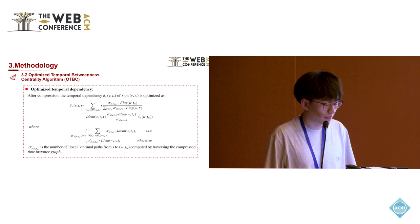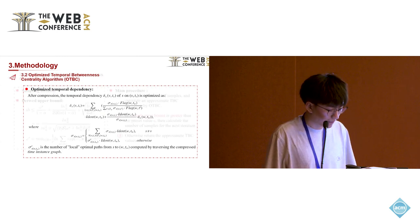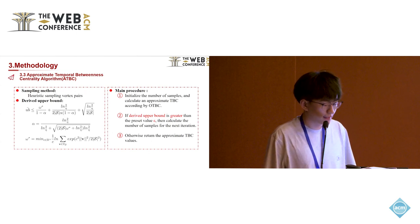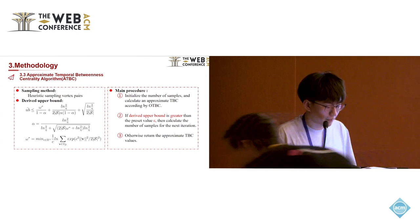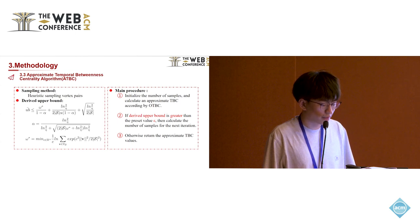Using the compressed time instance graph, we devised an optimized temporal dependency. When calculating the optimal temporal path count, we multiply by an identity factor, where identity represents the number of equivalent vertex instances. This allows us to record information and calculate temporal dependency more quickly. We also propose an approximate temporal betweenness centrality algorithm, ATBC, which uses heuristic sampling of vertex pairs and a derived upper bound based on Rademacher averages. The procedure of ATBC is: first, initialize the number of samples and calculate an approximate TBC using OTBC. If the derived upper bound is greater than a preset threshold, calculate the number of samples for the next iteration; otherwise, retain the approximate TBC values.